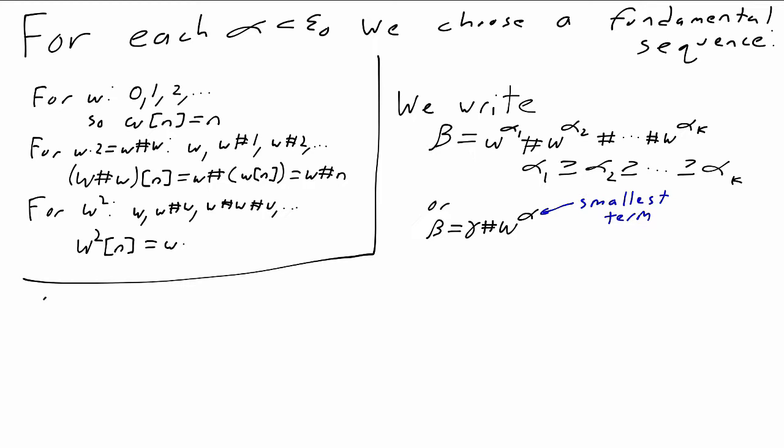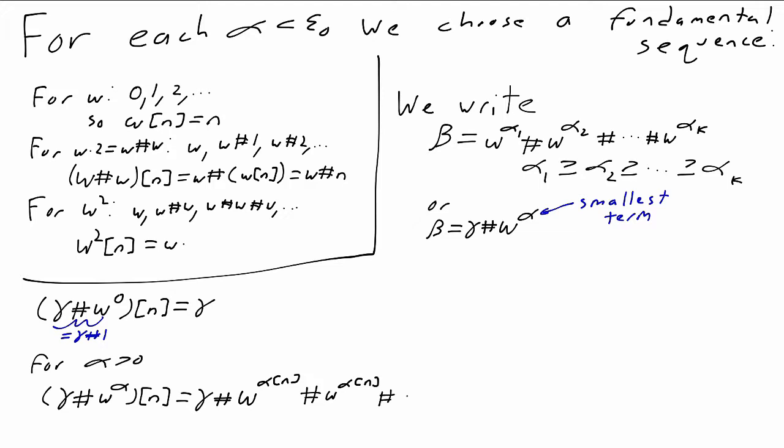When alpha is 0, so this is gamma plus omega to the 0, so gamma plus 1, gamma plus 1 bracket n will just be gamma for every n. And when alpha is greater than 0, gamma plus omega to the alpha bracket n will be gamma plus n copies of omega to the alpha bracket n.